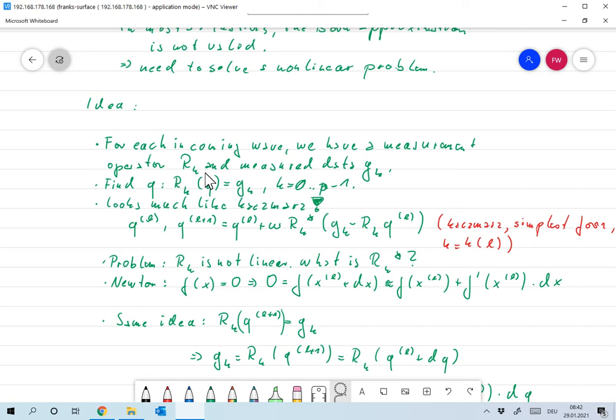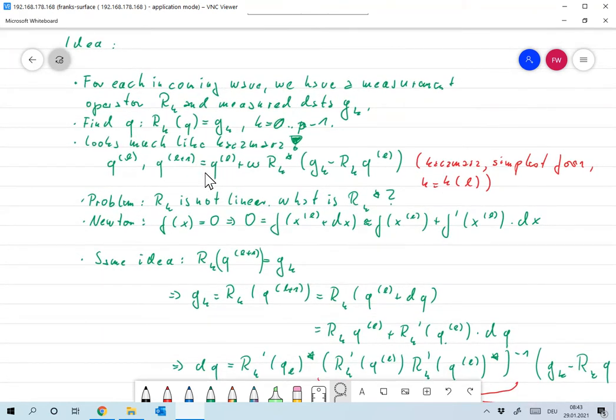What we want to find of course is a common solution for all measurement operators, so we would like to find a Q such that RK of Q is GK for K from 1 to P-1. That looks like CT and we were very successful with Kaczmarc's for numerical solutions, so we might think of using that again here. So what was the idea behind Kaczmarc's?